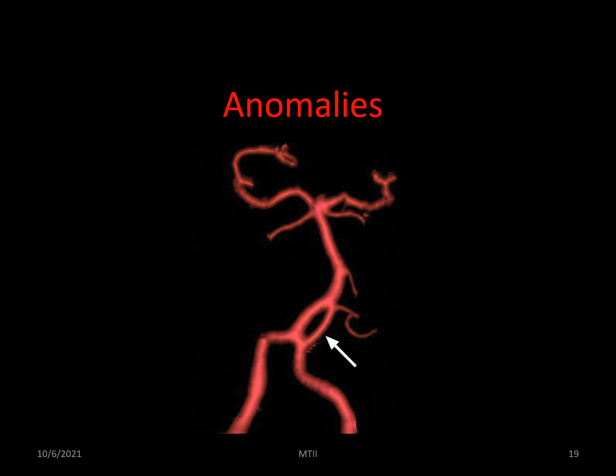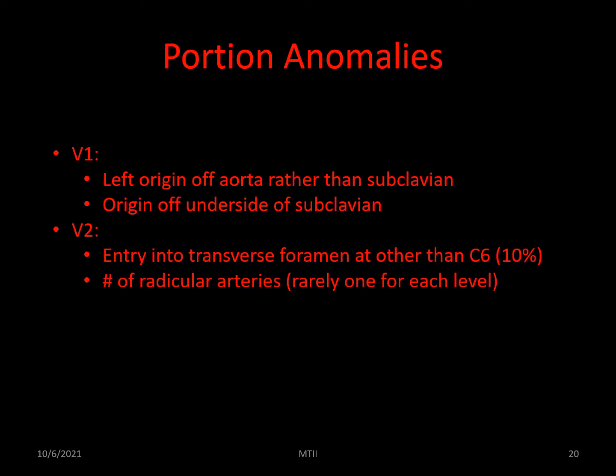Anomalies are the rule. With the vertebrobasilar system, for example, only about 40% of the population have roughly equal-sized arteries; the majority have one dominant and one minor artery. V1 anomalies include the artery arising from the aorta, from the common carotid, or from the underside of the subclavian — probably none of these will be much affected by what we do and are of more concern to the surgeon. The starting point of V2 is very consistent, being above 90% into C6, but it can be much higher or rarely lower; the commonest other entry point is C5. The higher the entry point, the more susceptible the artery is to muscular fibrous compression and torque forces — another reason to avoid large rotational displacements of the neck during manual treatments.